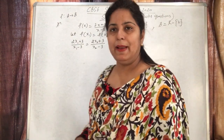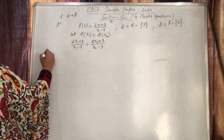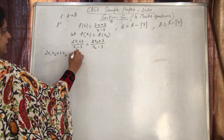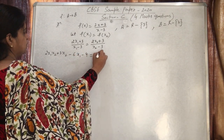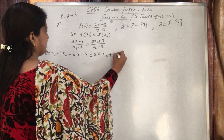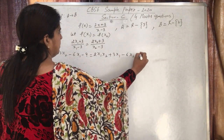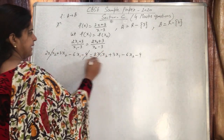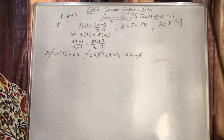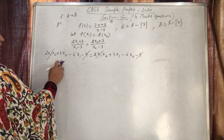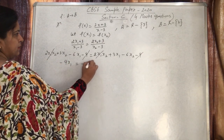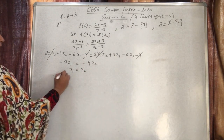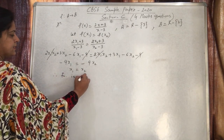After cross-multiplying and simplifying both sides, the 2x₁x₂ terms cancel, the 9 terms cancel, and we get 3x₁ - 9x₁ = -9x₂, which gives x₁ = x₂. Therefore the function is 1-1.